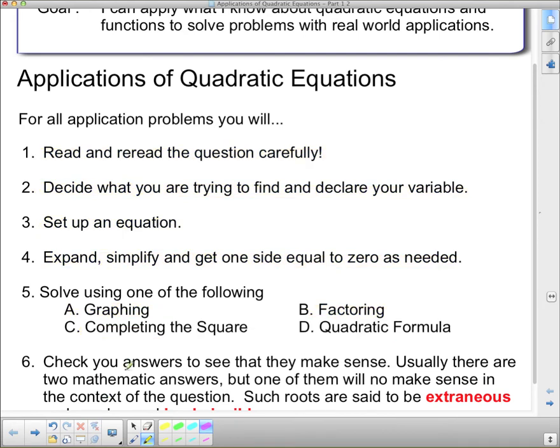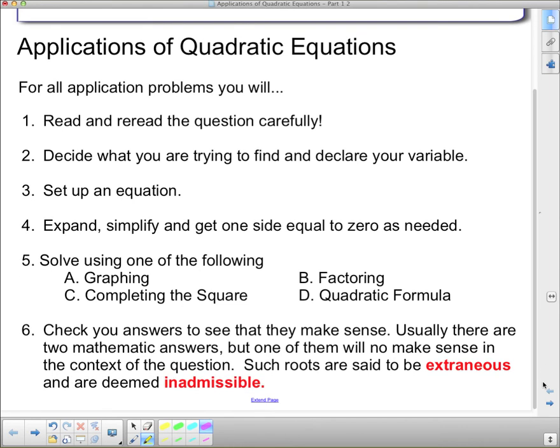Now, once you're done doing all of that, you need to check to make sure that your answers make sense. Usually there are two mathematic answers, but one of them will make no sense in the context of the question. Such roots are said to be extraneous and are deemed to be inadmissible. So you need to think about them and check your answers, which one is the inadmissible answer. Sometimes both answers are good, but often times one of them is inadmissible.